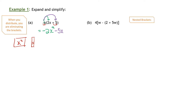Now let's look at Part B. These are nested brackets — we've done these before but I'm just going to recap. Nested brackets means we have brackets inside of brackets. Usually the square bracket is the outer one and the round bracket is the inner one. When we have nested brackets it's a clue about the order of operations we have to follow. The first thing I'm going to have to do is distribute the negative sign into the round bracket first.